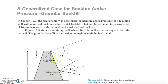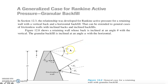This figure shows the general case for a retaining wall with granular backfill. The back face is inclined at an angle theta with the vertical. The granular backfill — which can be gravel, silt, or sand — is also inclined at an angle alpha with respect to the horizontal.